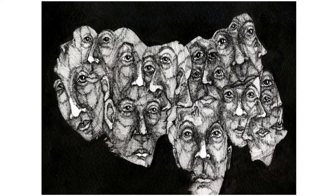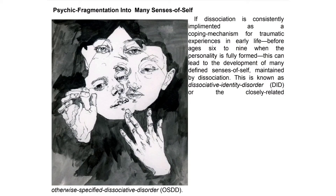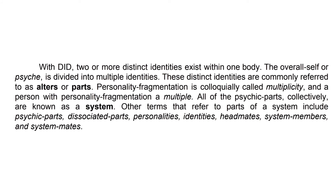If dissociation is consistently implemented as a coping mechanism for traumatic experiences in early life — before ages six to nine when the personality is fully formed — this can lead to the development of many defined senses of self maintained by dissociation, known as dissociative identity disorder or the closely related otherwise specified dissociative disorder. With DID, two or more distinct identities exist within one body. These distinct identities are commonly referred to as alters or parts, and personality fragmentation is colloquially called multiplicity. All of the psychic parts collectively are known as a system.